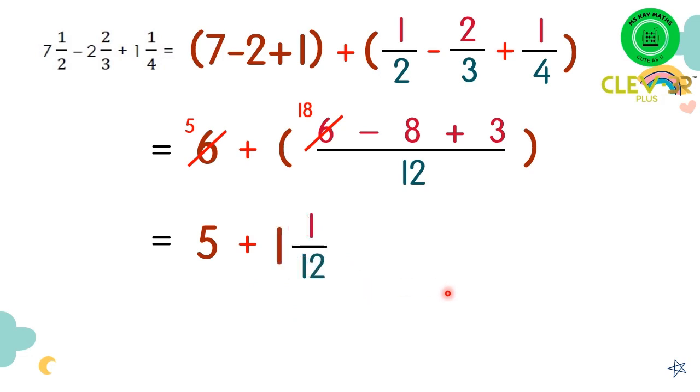So we have 1 and 1/12, and we plus the first number here, 5, and the final answer should be 6 and 1/12. So I hope you understand the question. Let's meet again in other exercises. Thank you.